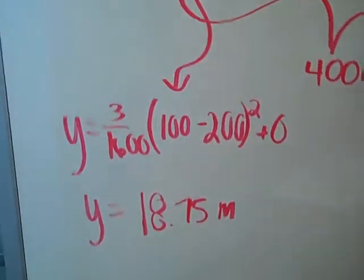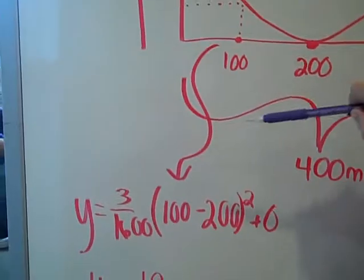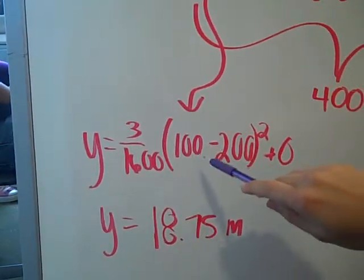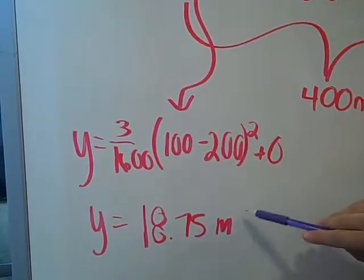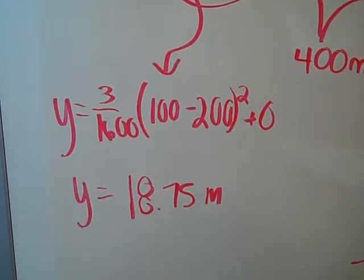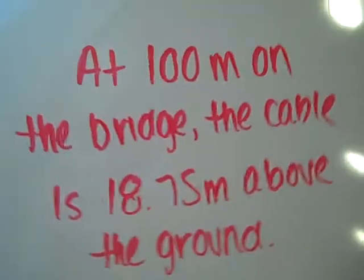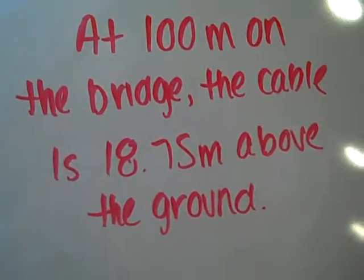Our original question was to find the height at 100 meters on the bridge, so we plugged in 100 as x and got our answer as 18.75 meters from the ground. At 100 meters on the bridge, the cable is 18.75 meters above the ground.